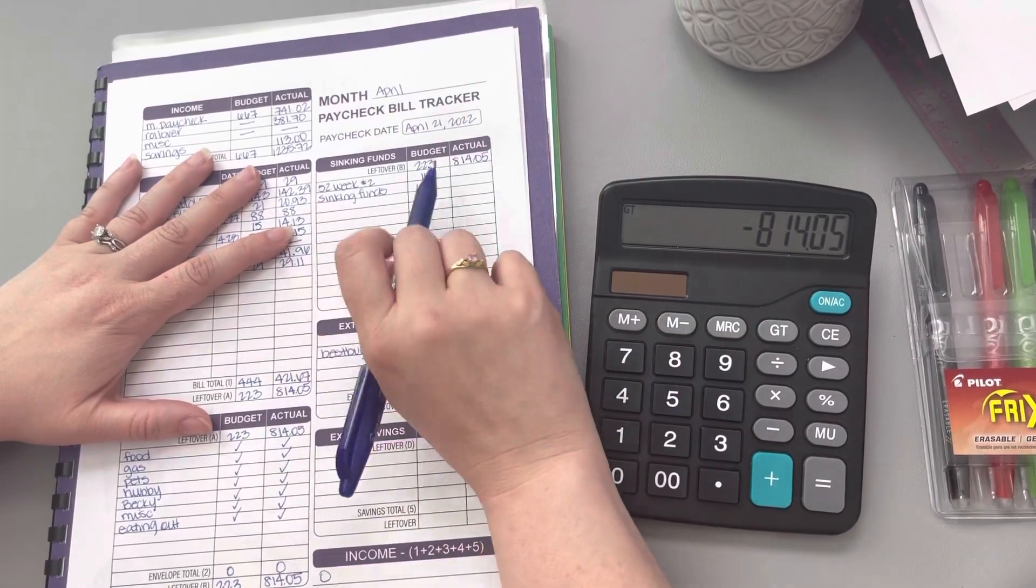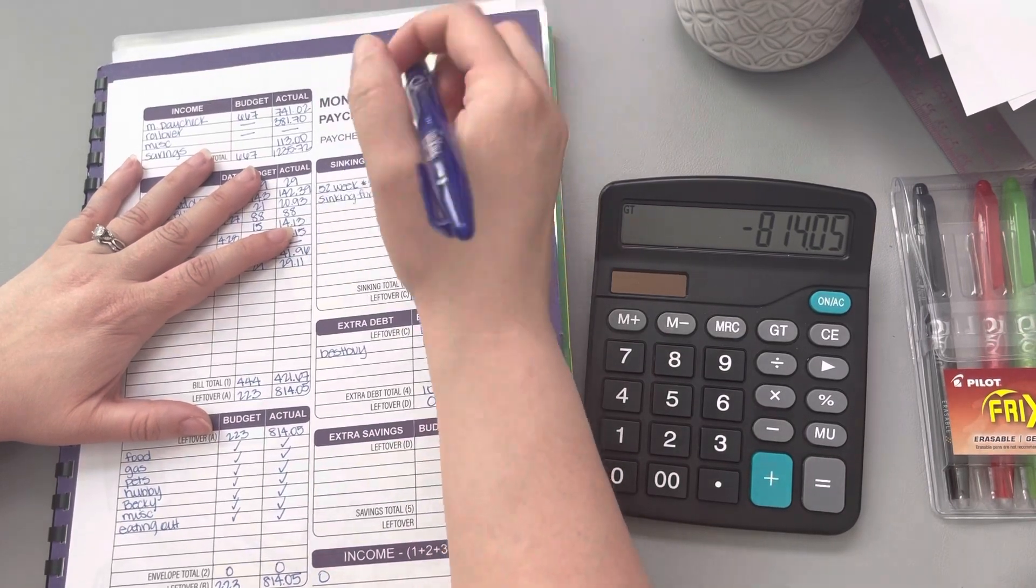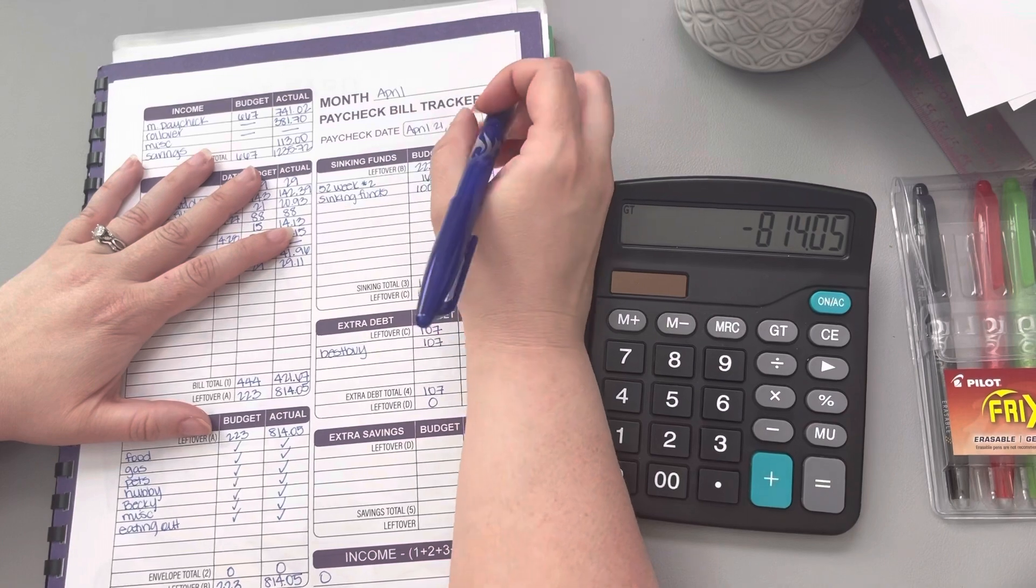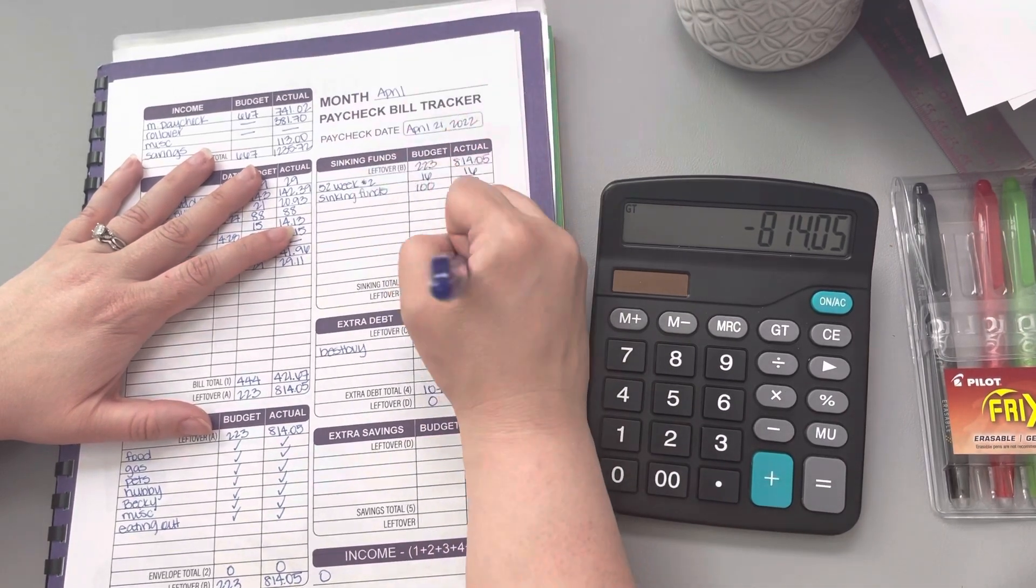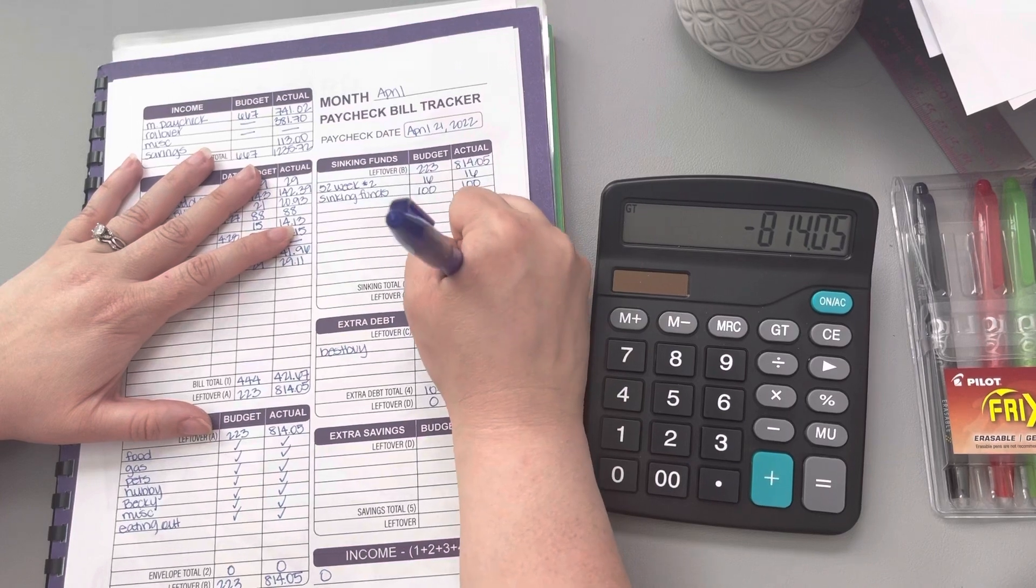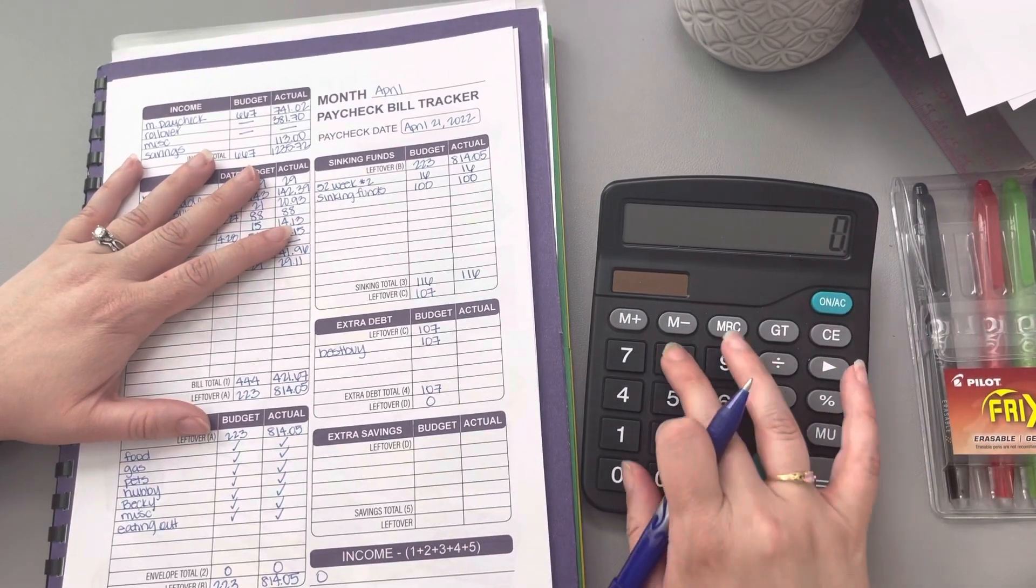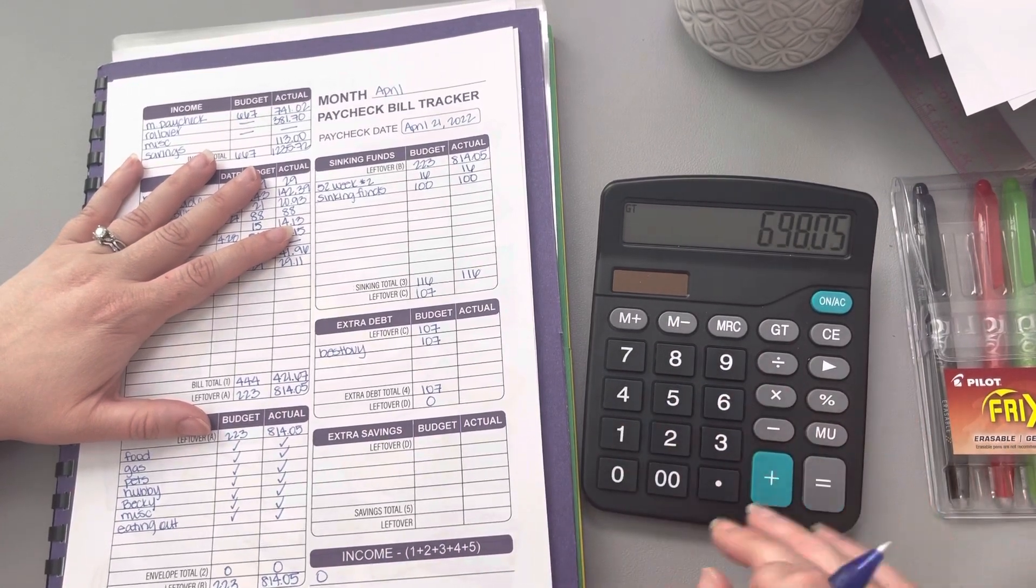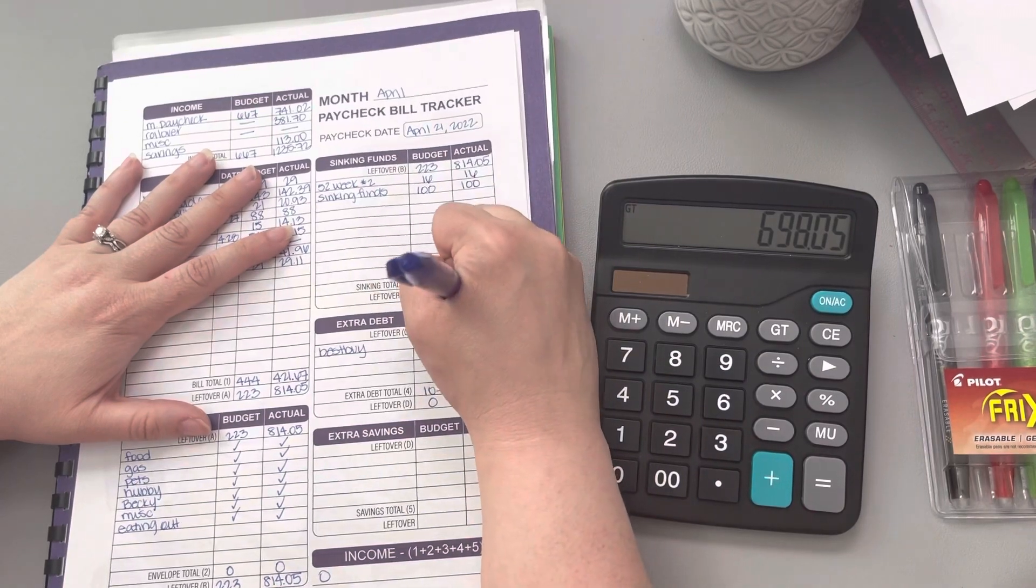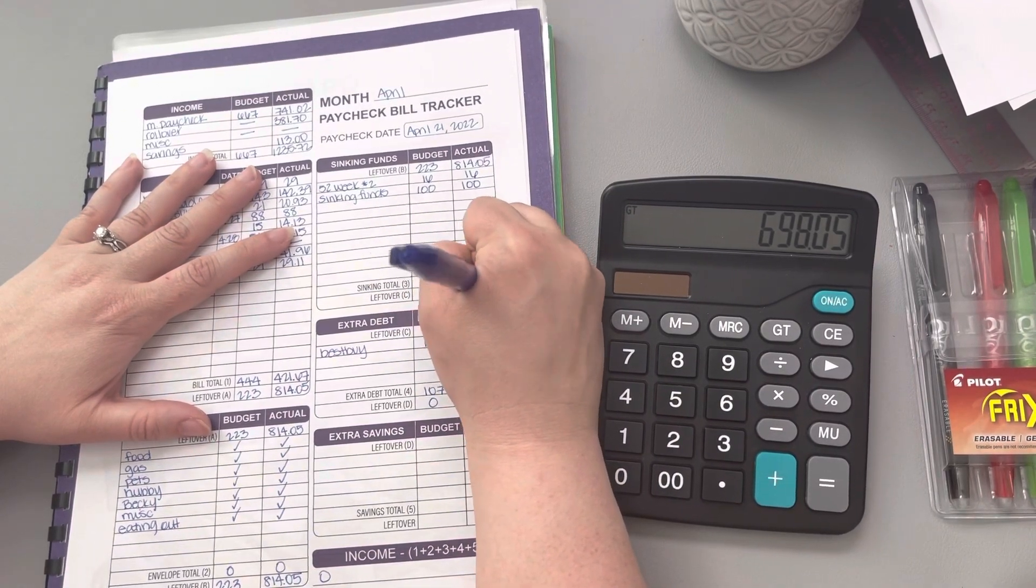I went ahead and transferred the $16 into my husband's account, and then I took out the $100 for sinking funds. That comes to a total of $116. Now when we take the $116 away from the $814, that leaves us with $698.05.